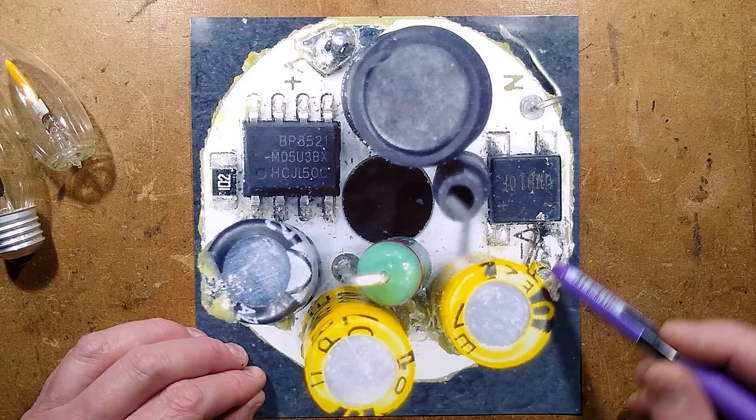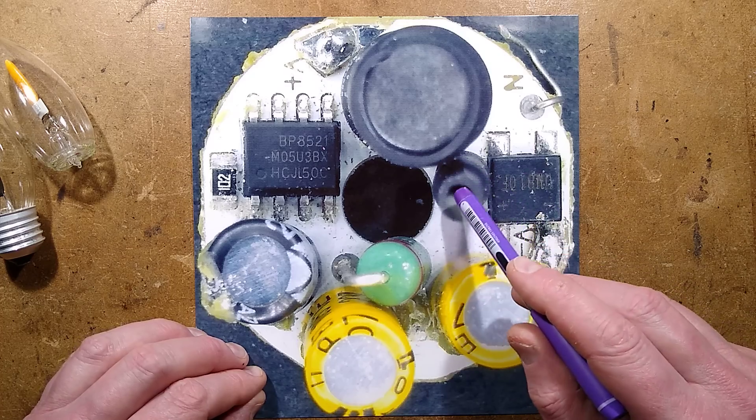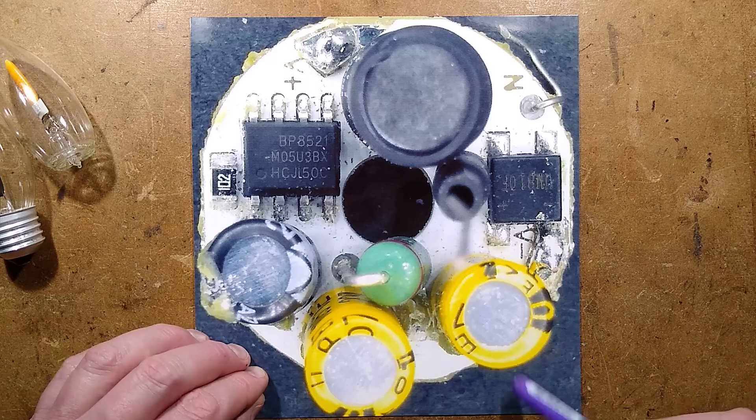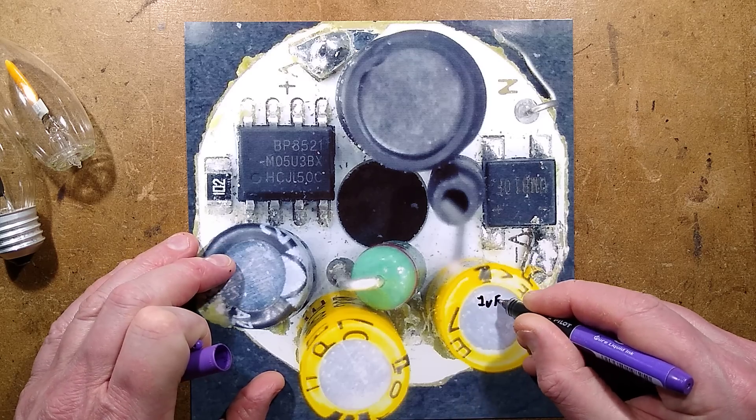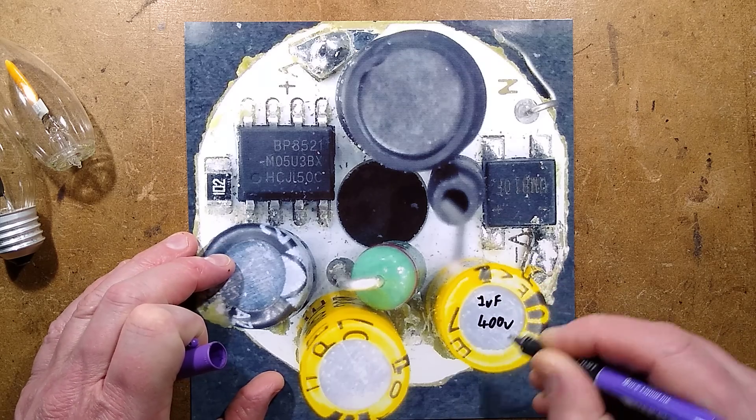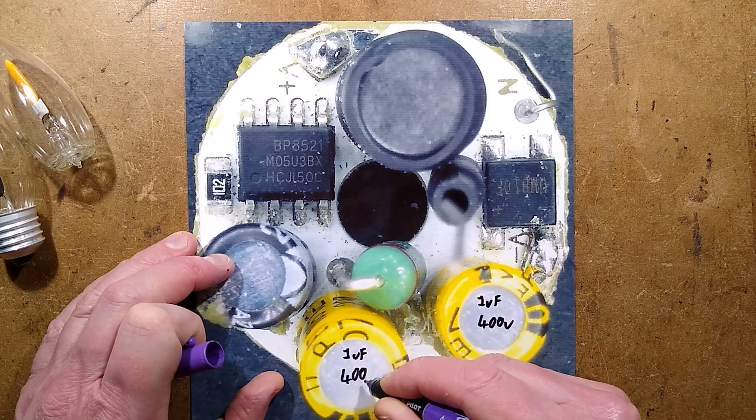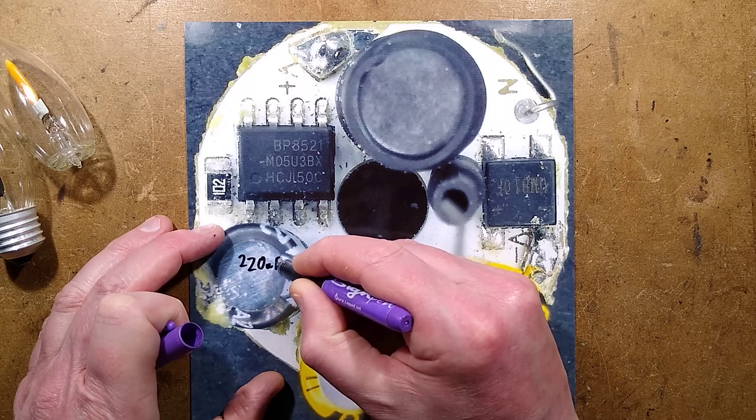The main components: you've got the bridge rectifier, a 33 ohm fusible resistor, a smoothing capacitor just 1 microfarad 400 volt. This is also 1 microfarad 400 volt, and that is 220 microfarad at 10 volt.